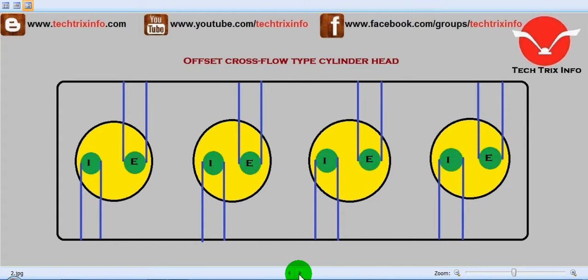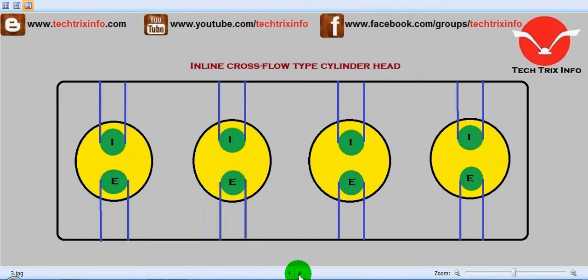In the third type, it's the inline cross flow type cylinder heads. The valves are positioned transversely and usually inclined to each other, while the inlet and the exhaust manifolds are on different sides of the cylinder head. This is called the inline cross flow type cylinder head arrangement.